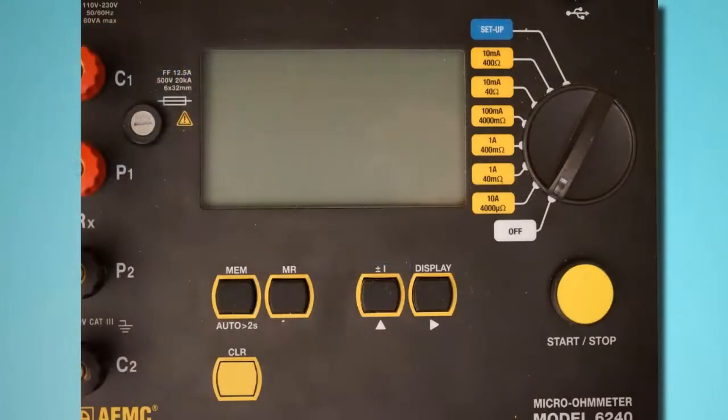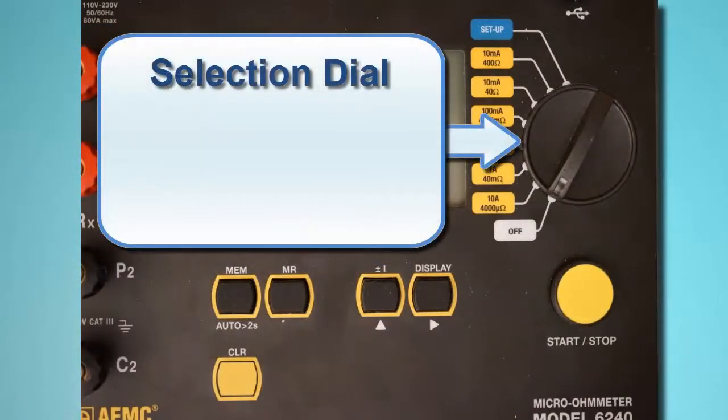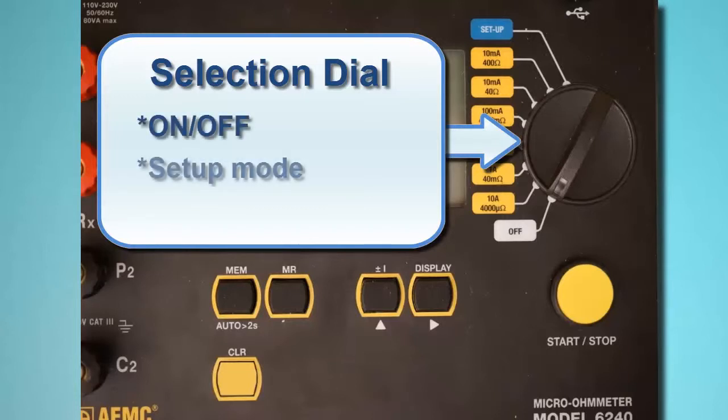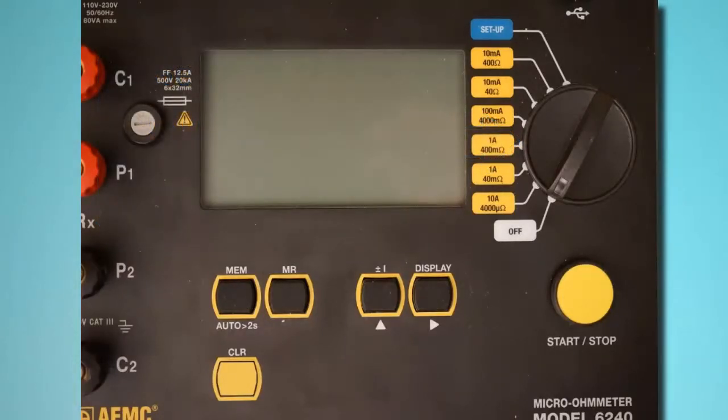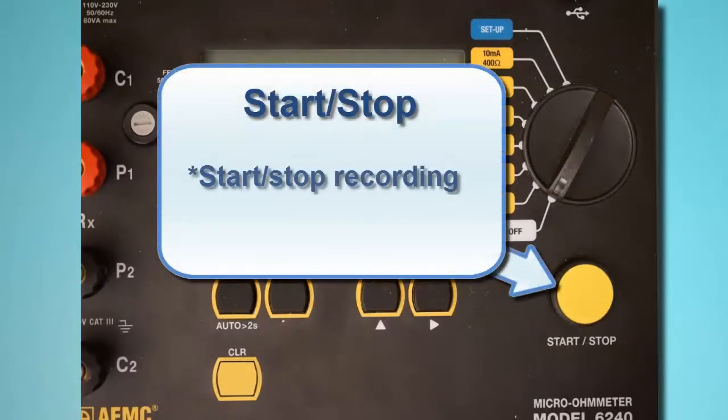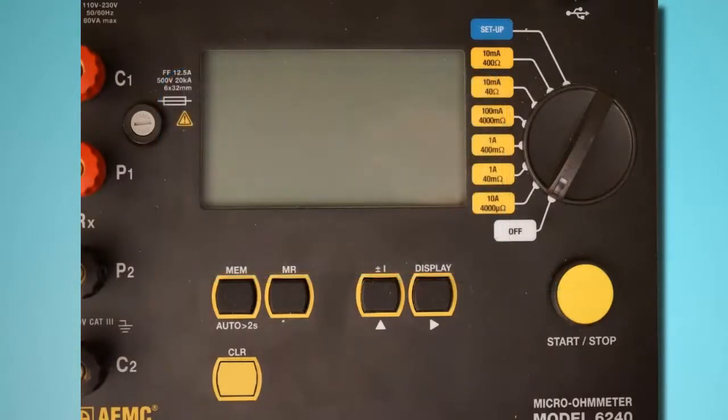To the right of the LCD is the instrument selection dial. This dial turns the instrument on and off, places the instrument in setup mode, and selects the test current resistance and current range. Below the dial is the Start-Stop button for starting and pausing test measurement sessions. The Model 6240 interface is described in detail in the user manual that accompanies the instrument.